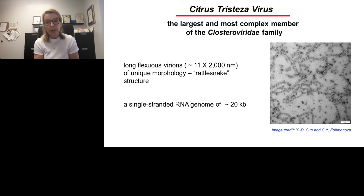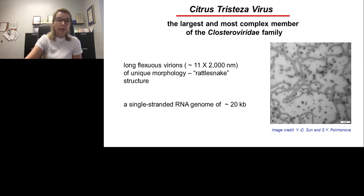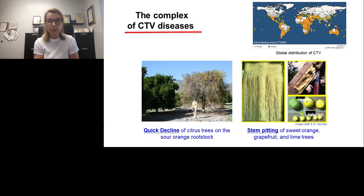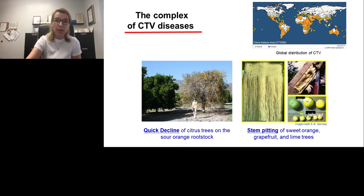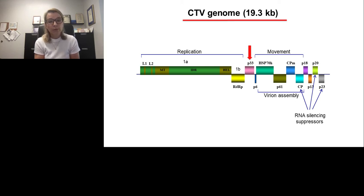The virus is transmitted by aphids and by infected budwood, and in citrus causes two major diseases. Quick decline, which is death of citrus trees grafted onto the sour orange rootstock, and stem pitting, which severely affects sweet oranges, grapefruit, and lime trees irrespective of the rootstock, and results from the abnormal vascular development induced by the virus.